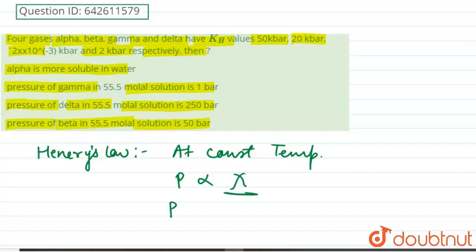So partial pressure P, if we remove the proportionality, then here it should be KH, which is known as Henry's law constant, into mole fraction.